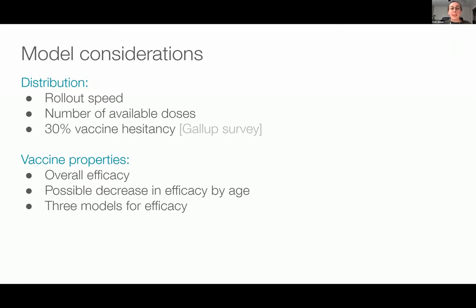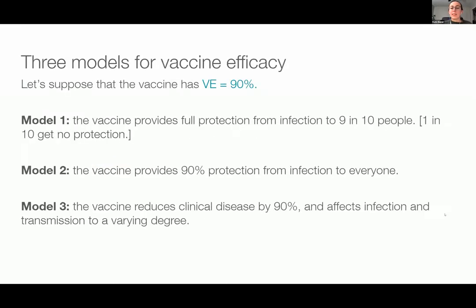Thinking about vaccine properties specifically, the values we needed to incorporate vaccination in our model included the overall efficacy. We also looked at possible decreases in efficacy by age — we really weren't sure if this was going to be a problem when we started this project, and we wanted to see if it should shift our ideas about prioritization. We then considered three different models for efficacy. Because a priori we really weren't sure what vaccination was going to look like, it's an important part of modeling to know if a modeling choice is affecting our results or not.